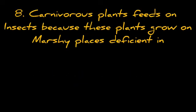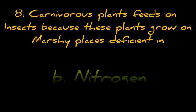Carnivorous plants feed on insects because these plants grow on marshy places deficient in nitrogen.